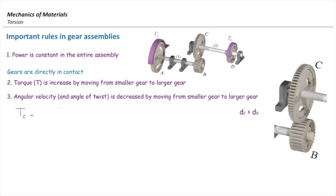What does it mean? The gear ratio should be larger than one. So I can say that TC is equal to gear ratio multiplied by TB. But gear ratio should be larger than one in this case.